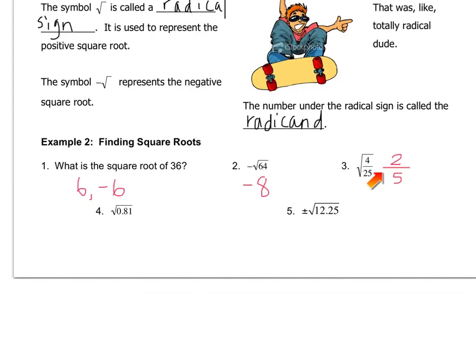If you want to get your calculator, feel free to do so and try playing around with the square root symbol. The answer to number 4 is 0.9 because 0.9 times 0.9 equals 0.81. And in number 5, the square root of 12.25 is 3.5. That symbol, if you look closely, has a plus sign on top and a minus sign on the bottom. So they're actually telling us they want both answers, both the positive and the negative. You can write it as plus-or-minus 3.5.